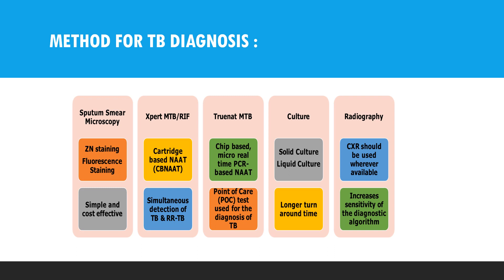The methods for TB diagnosis are: smear microscopy, GeneXpert MTB/RIF, Truenat MTB, culture, and radiology. Smear microscopy uses Ziehl-Neelsen staining or fluorescent staining — it is simple and cost-effective. GeneXpert MTB/RIF is a cartridge-based nucleic acid amplification test that helps in simultaneous detection of tuberculosis and rifampicin resistance. Truenat MTB is a chip-based micro real-time PCR nucleic acid amplification test and a point-of-care test for TB diagnosis. Culture can be either solid or liquid, though it has a longer turnaround time. Chest X-ray should be used wherever possible as it increases the sensitivity of the diagnostic algorithm.